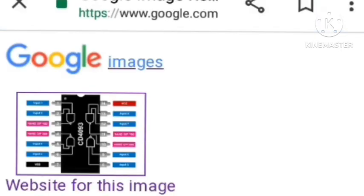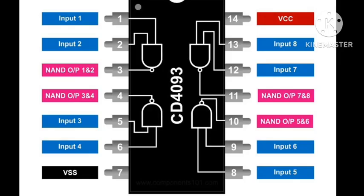So here is a pin out diagram of the CD4093 IC with four NAND gates. We have number one, two, five, six, eight, nine, twelve, and thirteen as the inputs, and then we have number three, four, ten, and eleven as the outputs. And then we have number fourteen as the positive input and seven as the negative input.